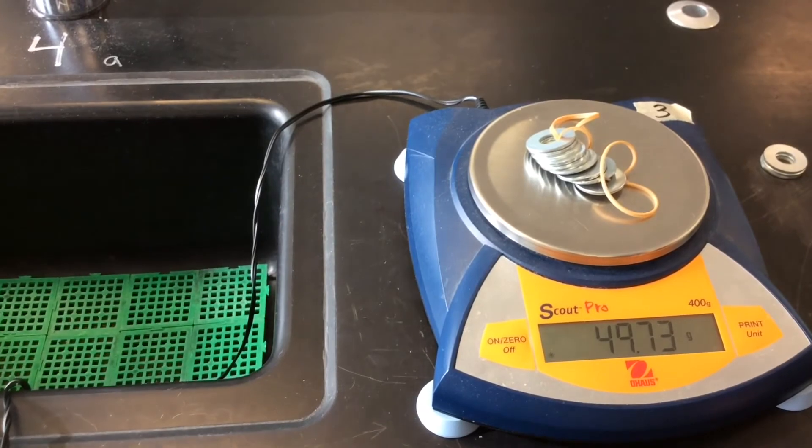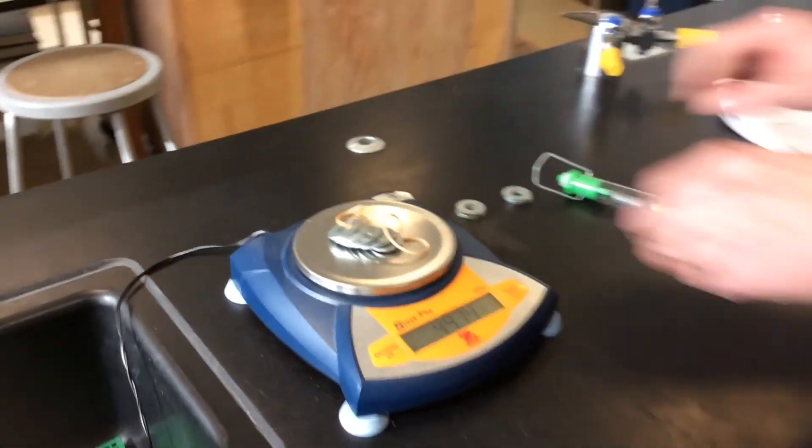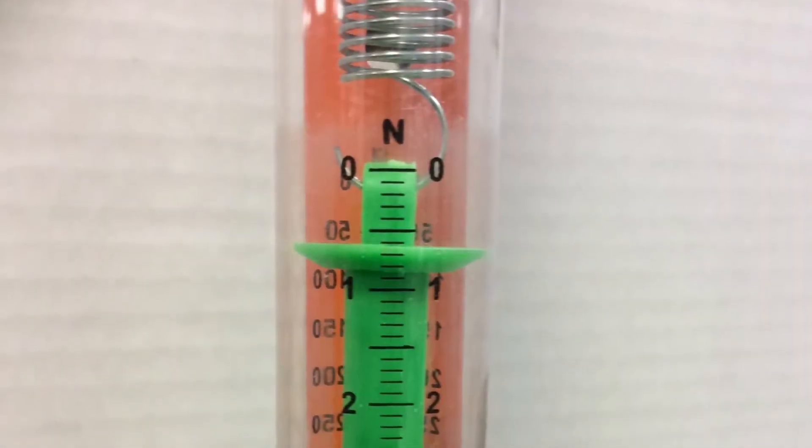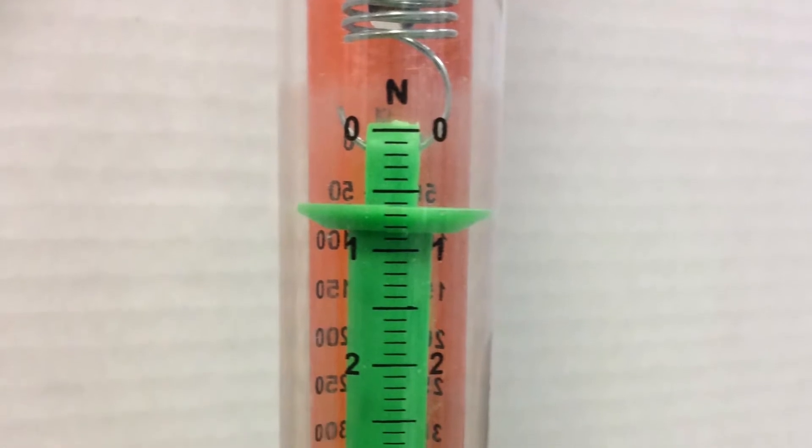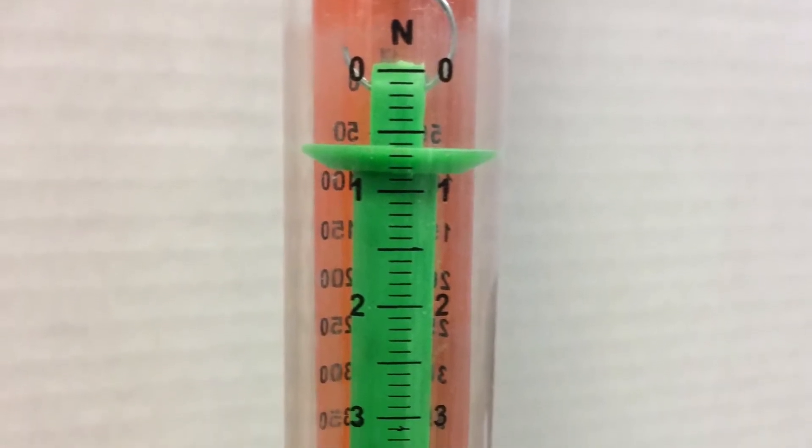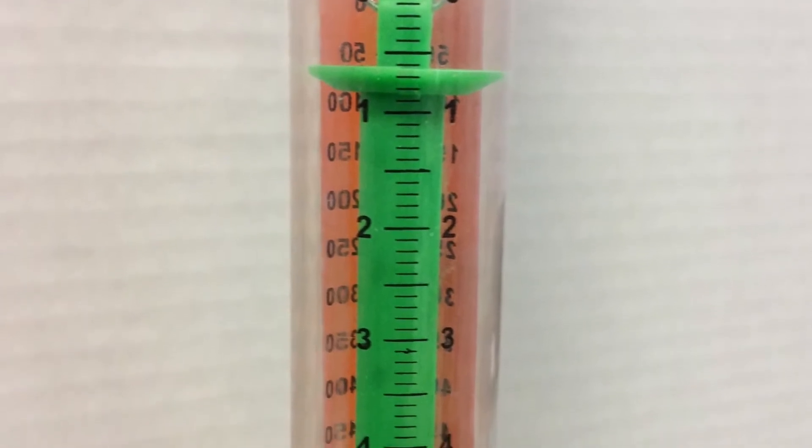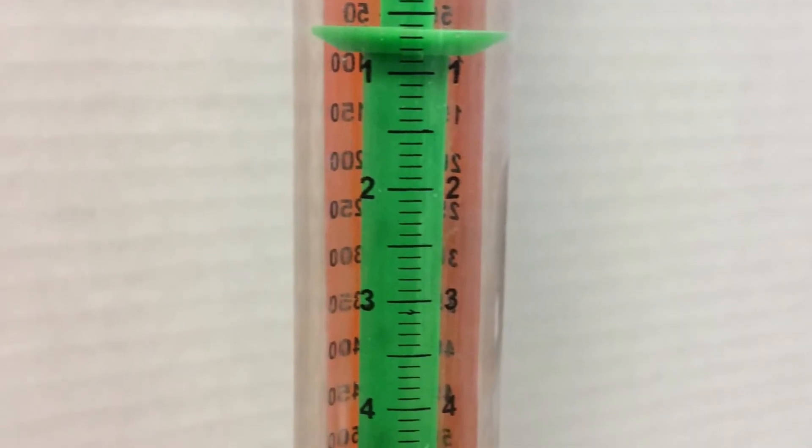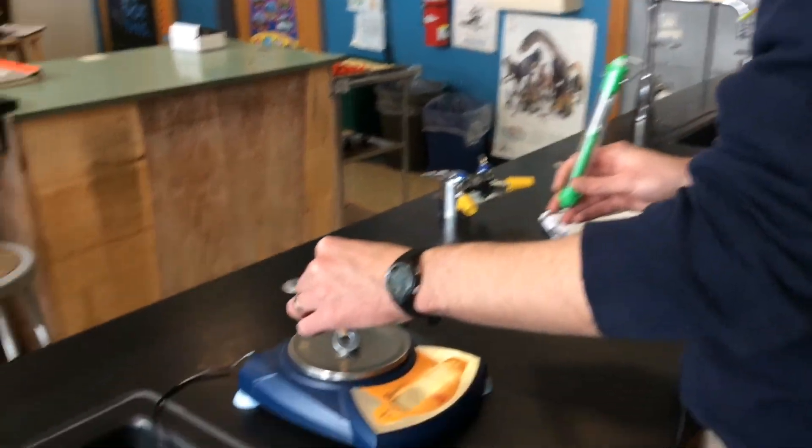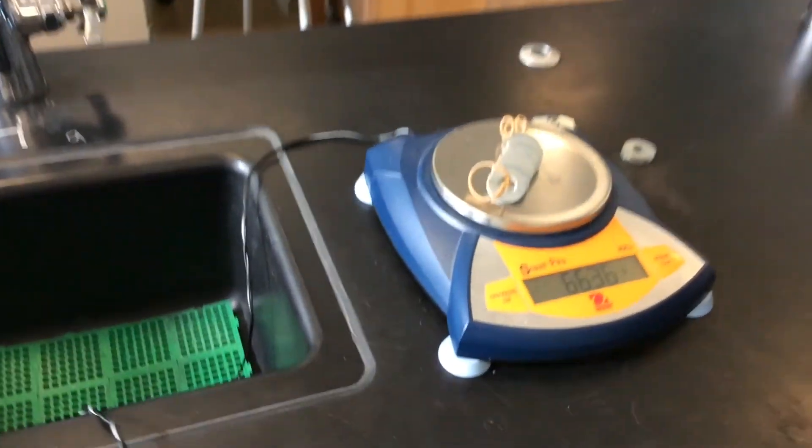Next, we're going to do 12 washers. This is our second-to-last data point. There is the weight in newtons of 12 washers. Read that. Record it on your data table. And the mass in grams.